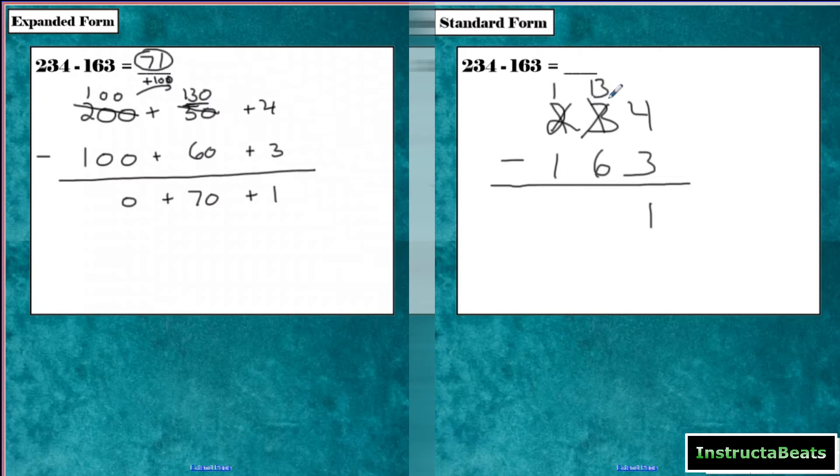So we're not showing the value of it, but it is 13 tens, which is going to be 7. And then 1 minus 1 would be 0, so our answer would be 71.